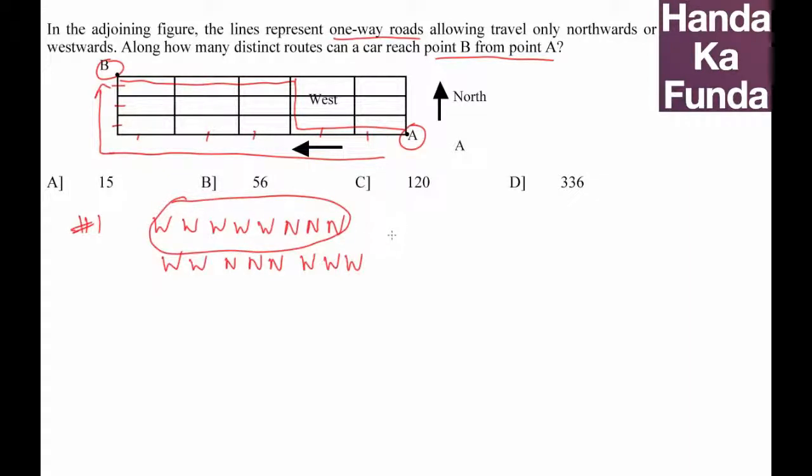And in how many ways can this be rearranged? Well, there are eight entities so they can be rearranged in 8 factorial ways, divided by 5 factorial because the five W's are identical, divided by 3 factorial because the three N's are identical.